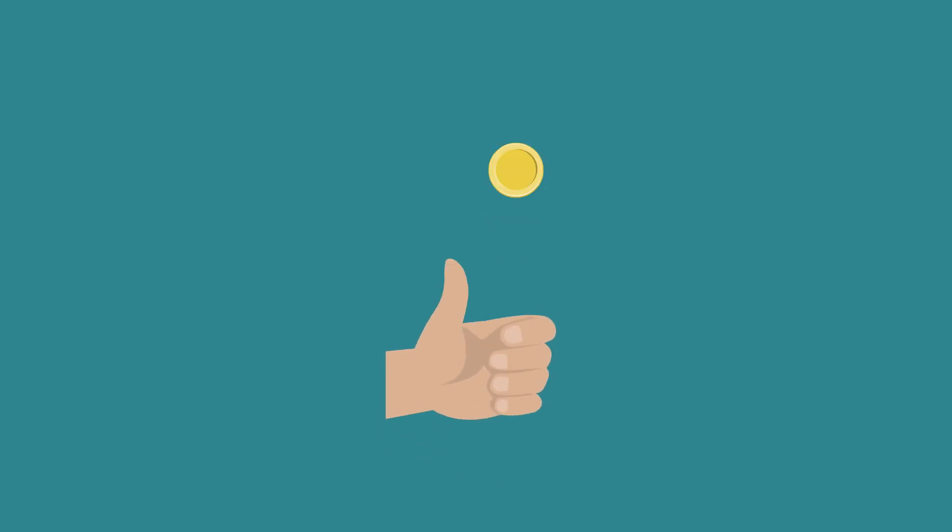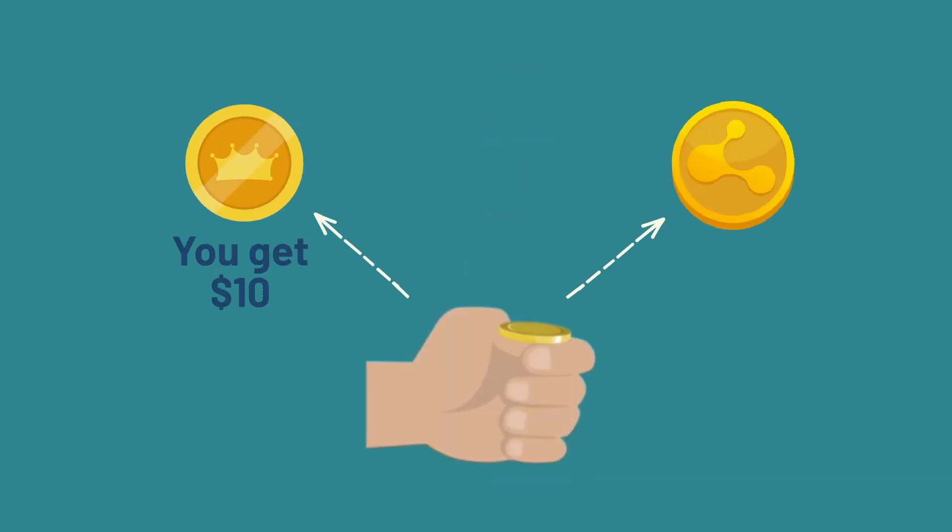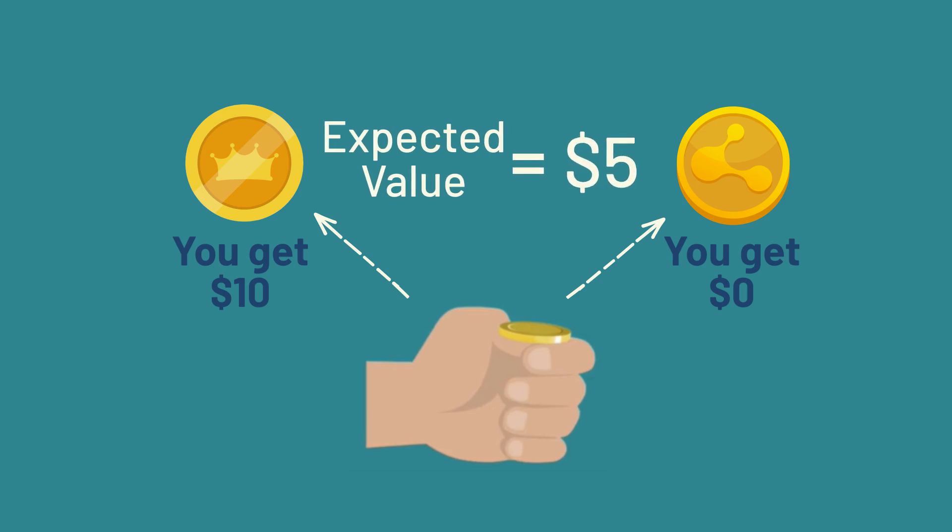For example, let's say we flip a coin. If it's heads, you get $10. If it's tails, you get nothing. The expected value is $5, because your winnings would average out to $5 per flip.